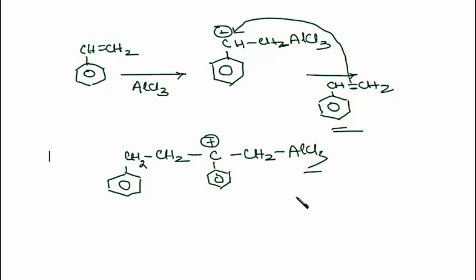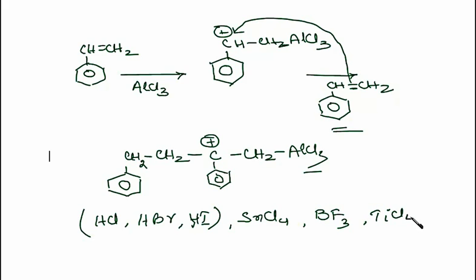Cationic polymerization is initiated by a cation or a Lewis acid or electrophilic reagents. It can be HCl or HBr or HI or Lewis acids. Can you tell me the examples of Lewis acids? They are your SnCl4, stanechloride or boron trifluoride or titanium tetrachloride or it can be I2 or AgClO4. So a cationic polymerization is initiated by a Lewis acid.